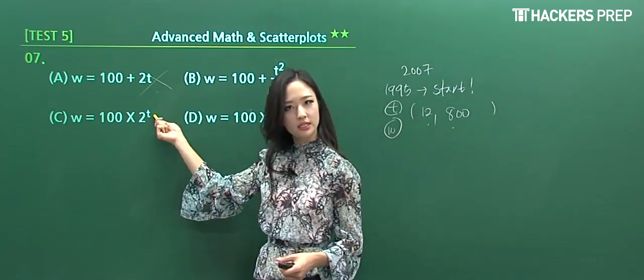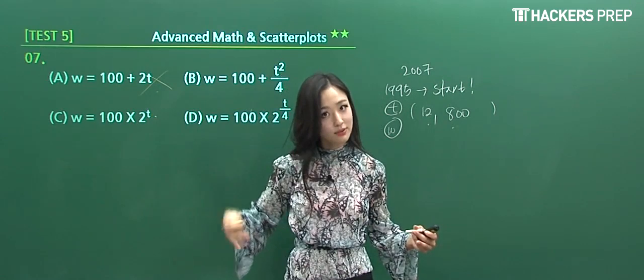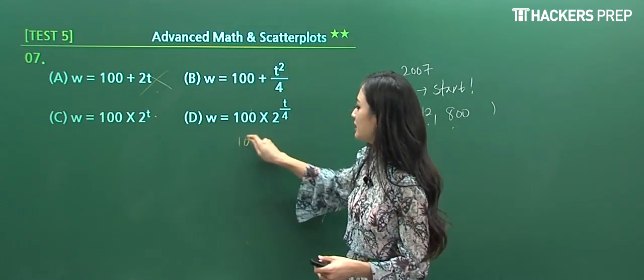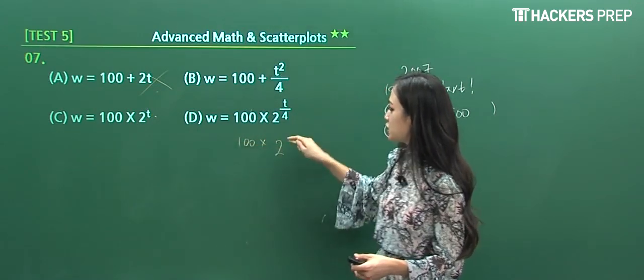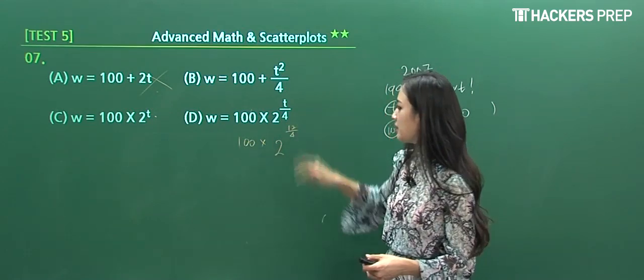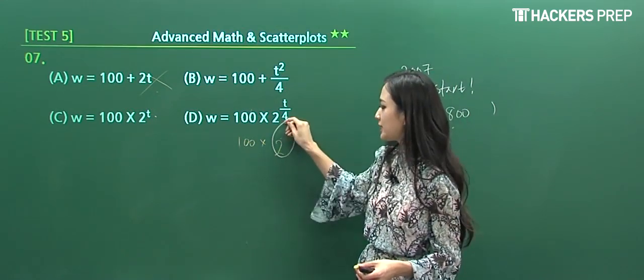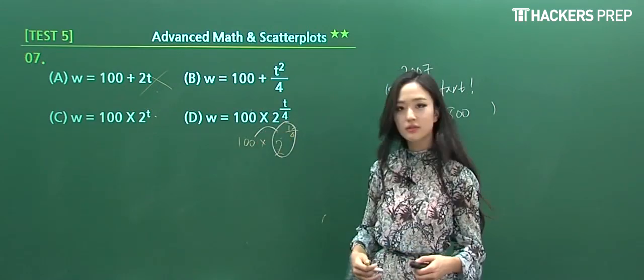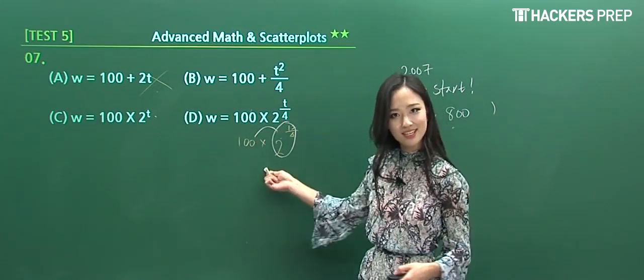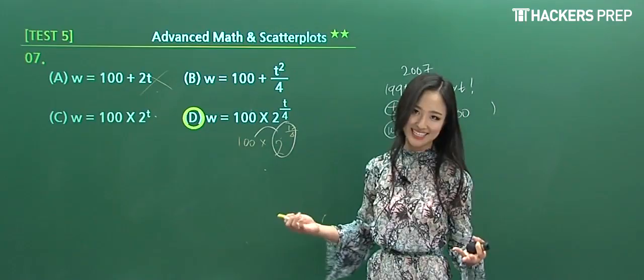For the final one, when we have 100 times 2 raised to the 12/4 power, this corresponds to 2 cubed, which is 8, times 100 equals 800. We can conclude that it matches our answer. So we circle D.